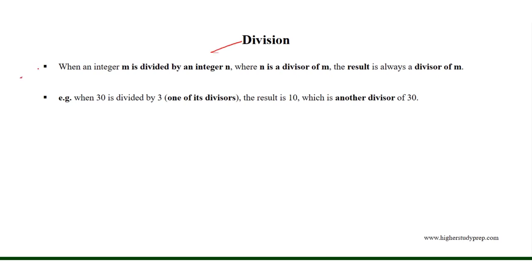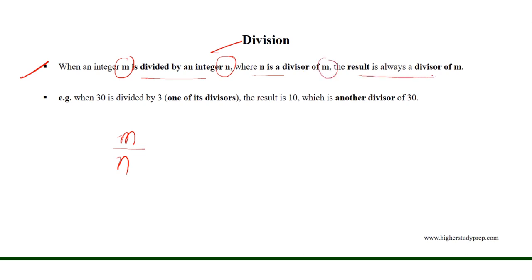Division. When an integer m is divided by an integer n, where n is a divisor of m, the result is always a divisor of m.